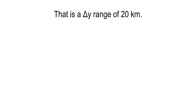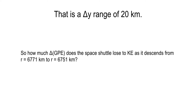Here's a question: how much change in GPE does the space shuttle lose to kinetic energy as it descends from low earth orbit at 6,771 km down 20 kilometers to 6,751 km? That would be a valid estimate of delta-GPE and delta-KE for the space shuttle — the first 20 kilometers down that it descends when it starts to deorbit and begins the landing process.